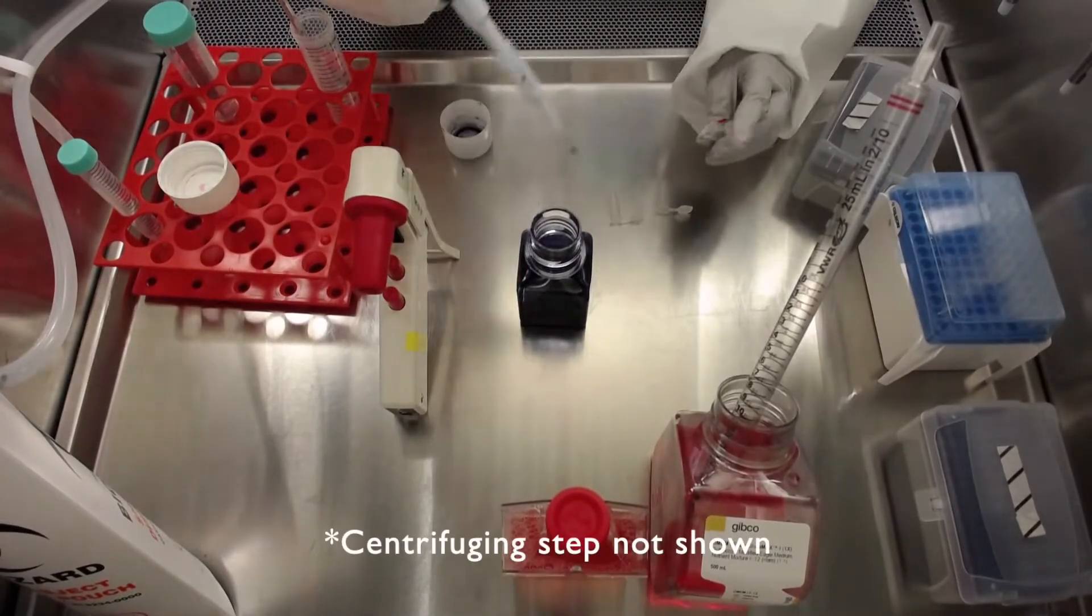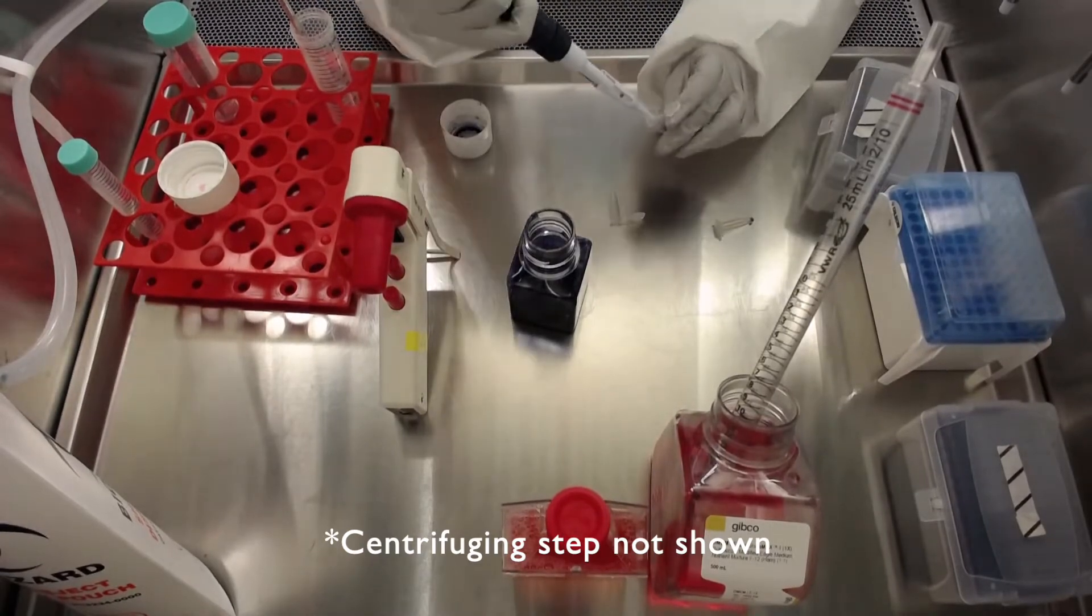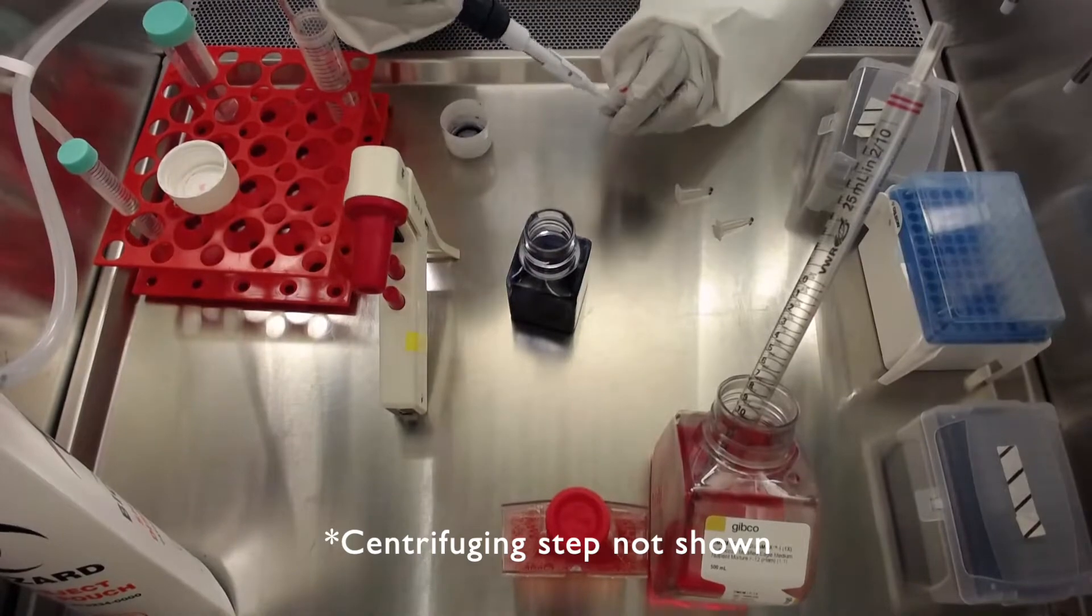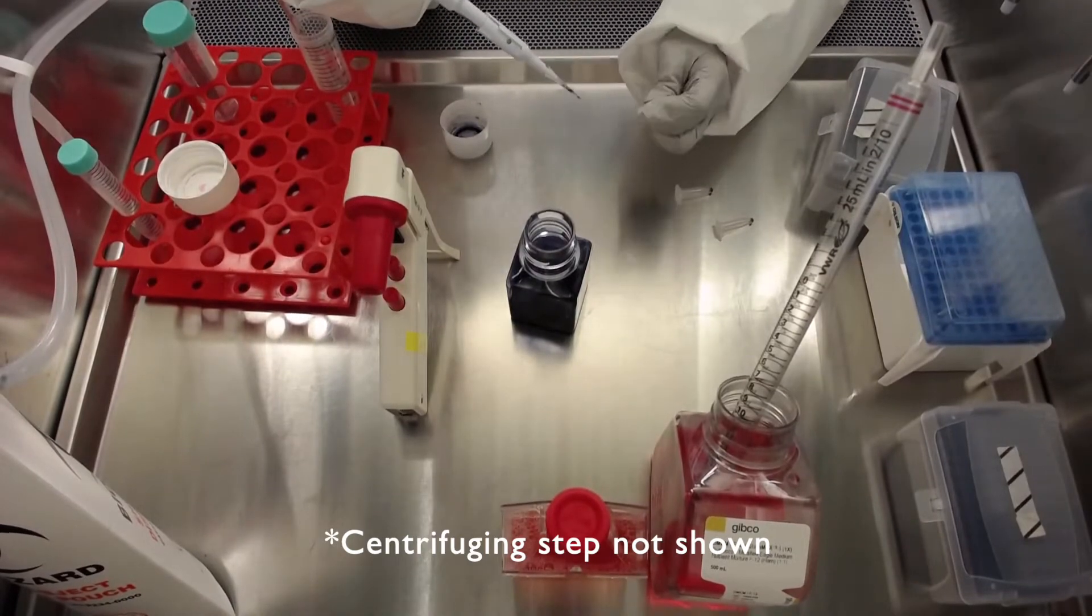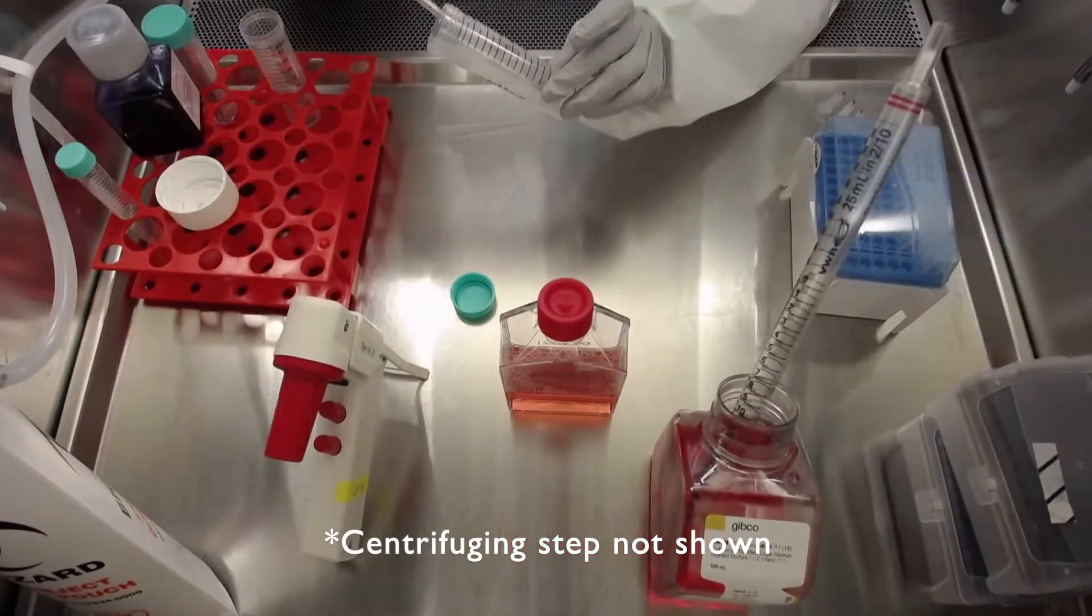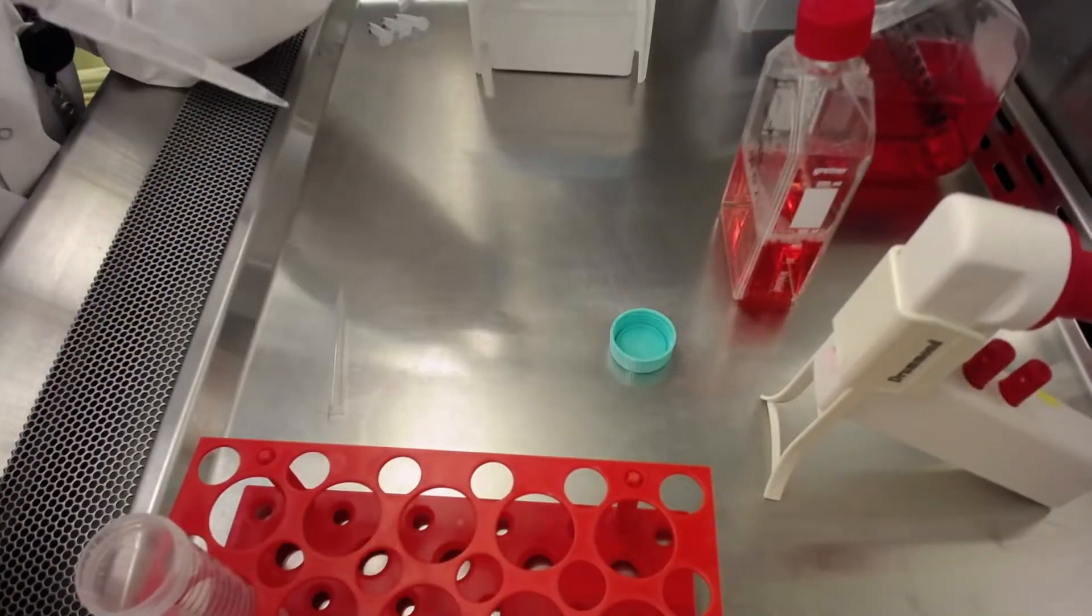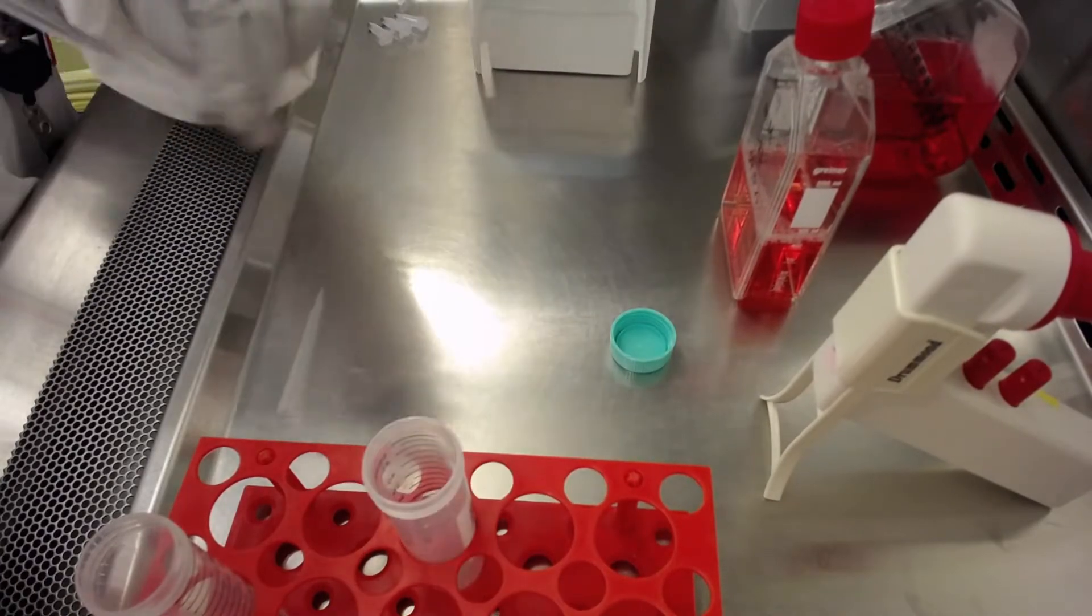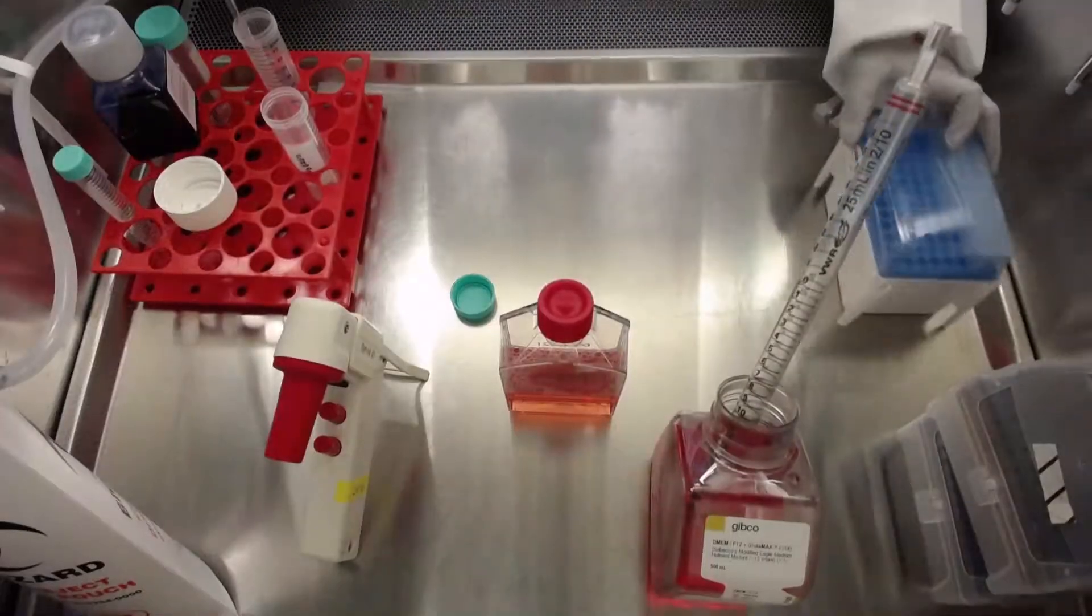Centrifuge this 50 milliliter tube for 3 minutes at 1200 RPM. While the tube is in the centrifuge, prepare for cell counting by aliquoting trypan blue in a sterile 0.2 milliliter Eppendorf tube. After centrifuging, a cell pellet will be formed at the bottom of the tube. Next, remove the supernatant without disturbing the pellet.